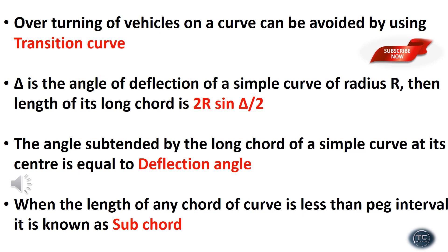Delta is the angle of deflection of a simple curve of radius R. The length of its long chord is 2R·sin(Δ/2). The angle of deflection for the curve is Δ/2. A sub-chord is any chord of the curve whose length is less than the peg interval.